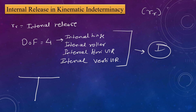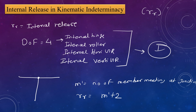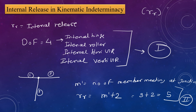The second method uses a junction or joint formula. Here m' is the number of members meeting at the junction, and rr equals m' + 2. For example, if three members meet at a junction, rr = 3 + 2 = 5. This is the second method to find internal release. We will see how to use these internal releases in the original kinematic indeterminacy formulas.